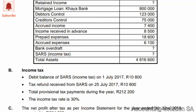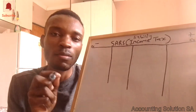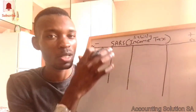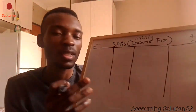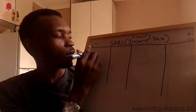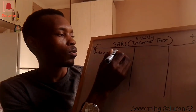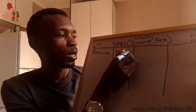Let's go back to the question. They said a debit balance of SARS income tax on 1 July 2017 is 10,800. Since they say it is a debit balance, you write it as it is on the debit side. If they said it was a credit balance, you would write it on the credit side. So we start with the balance of 10,800.